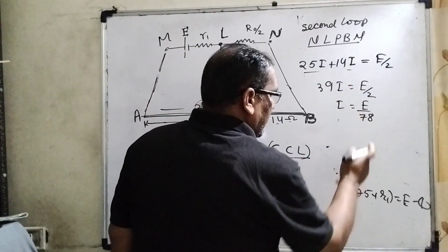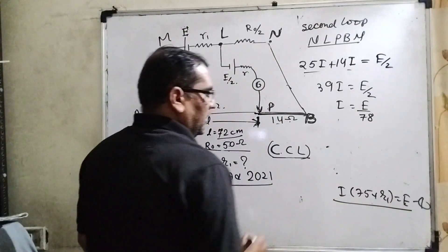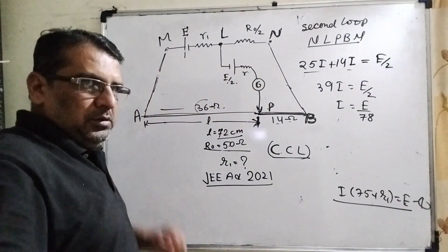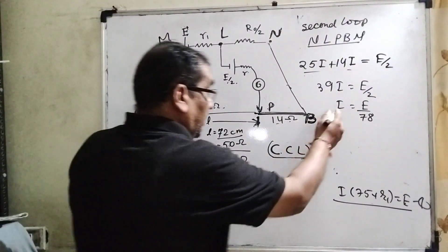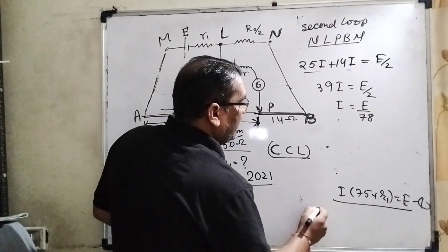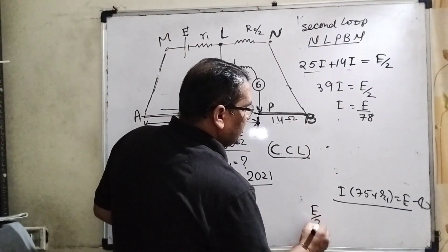Then I can be written as E by 78. Now substitute this value in equation 1.